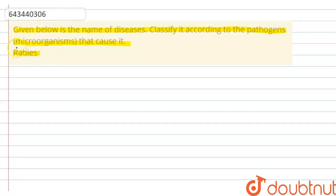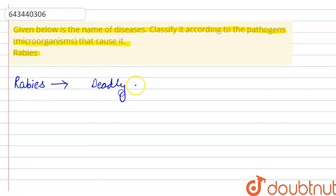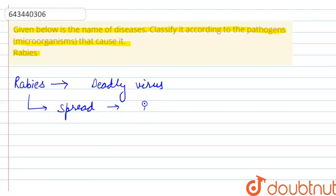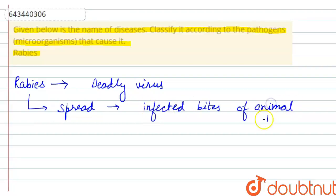Rabies is caused by a deadly virus. It is spread to people by the infected bite of animals. These animals most commonly include stray dogs.